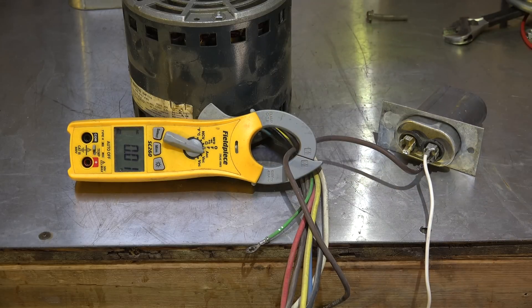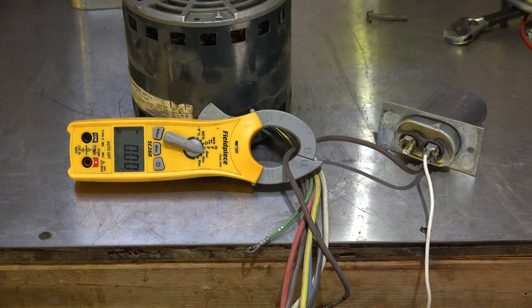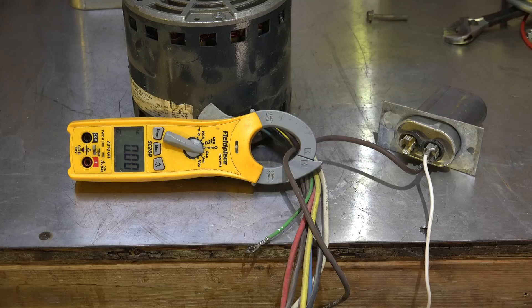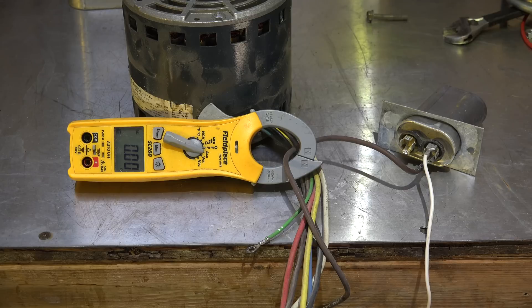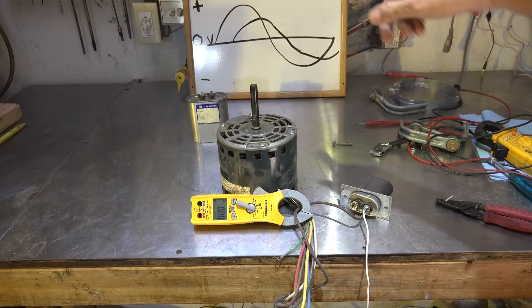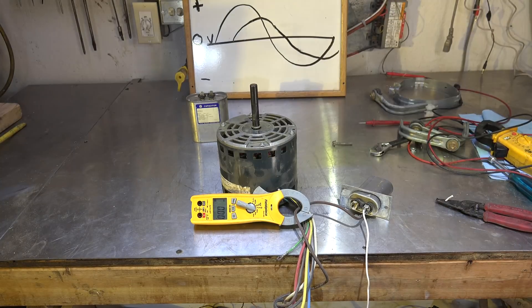The run cap acts as - I'll call it an impedance rather than a resistance, because it isn't the same as just a resistor, but it does impede the flow of electricity. And it also changes the way that start winding works. It makes it run smoother. Remember our little sine wave thing there?